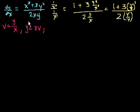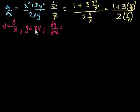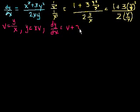And then of course, the derivative of y with respect to x — if we take the derivative with respect to x of both sides — that's equal to the derivative of x, which is 1, times v. This is just the product rule, plus x times the derivative of v with respect to x.